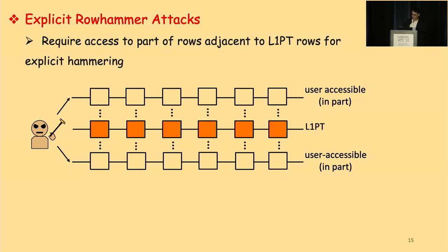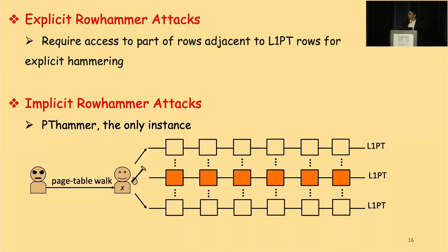Before PT-Hammer was published, Rowhammer attacks were explicit — they require access permissions to rows adjacent to level 1 page table rows, so those rows can be hammered to induce bit flips in the level 1 page table rows in the middle. For PT-Hammer, the attacker does not require explicit access permission. Instead, the attacker abuses the page table walk to trick the processor to implicitly hammer level 1 page tables on two sides and induce bit flips to level 1 page tables in the middle.